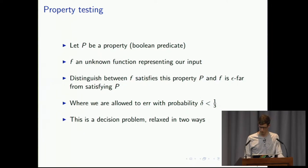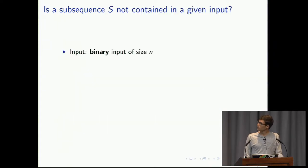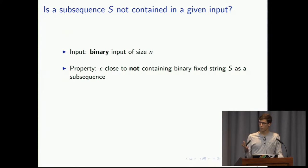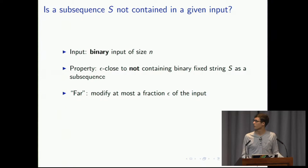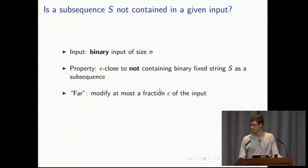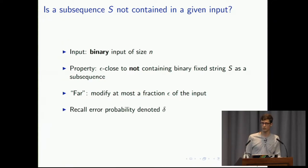Let's look at an example property we want to test for. We have a binary input of size n — an array filled with ones and zeros — and we want to test whether a fixed binary string S is not contained as a subsequence, or whether the input is epsilon-far from satisfying this property. Epsilon-far means we're allowed to modify epsilon-n many places of the input. For the rest of this talk, I'll denote the error probability with delta.